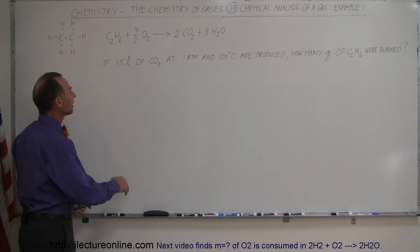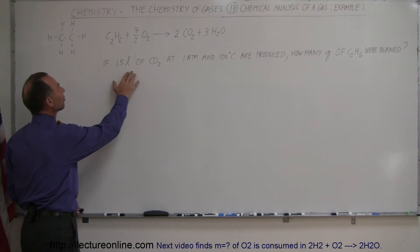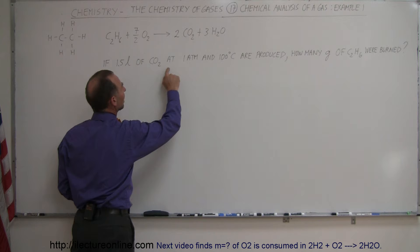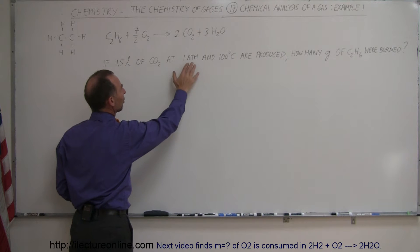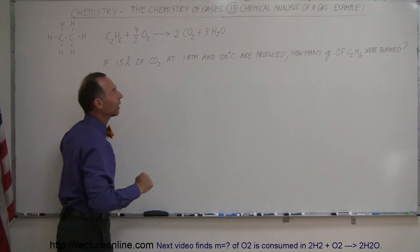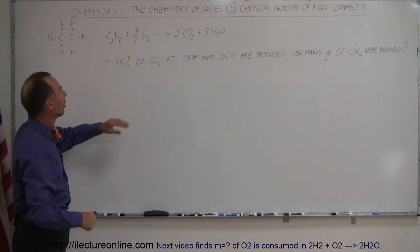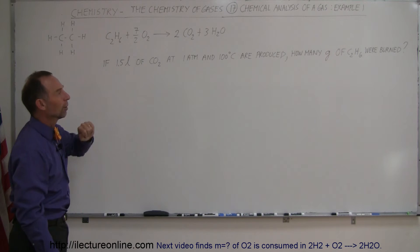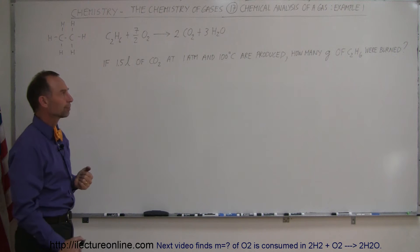Let's say that we had one and a half liters of carbon dioxide produced, and that carbon dioxide gas was at one atmosphere and 100 degrees centigrade. How many grams of ethane were burned in the reaction?